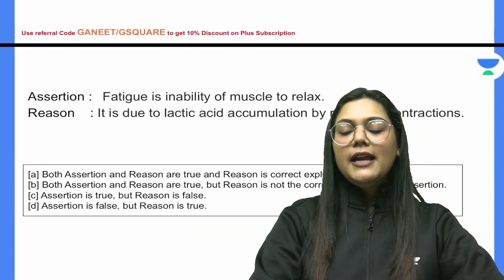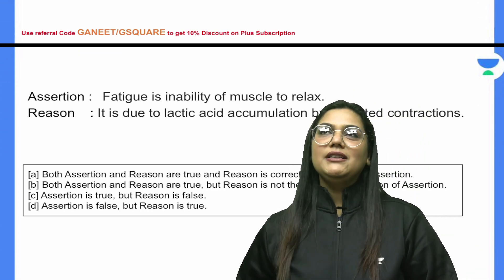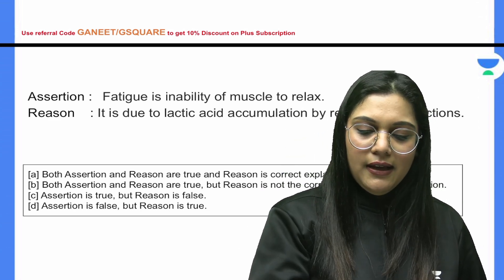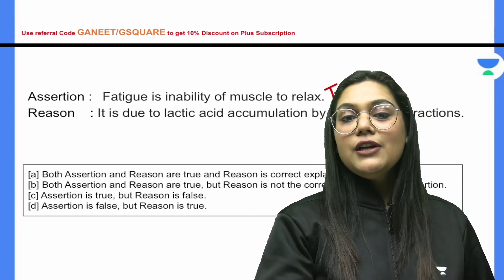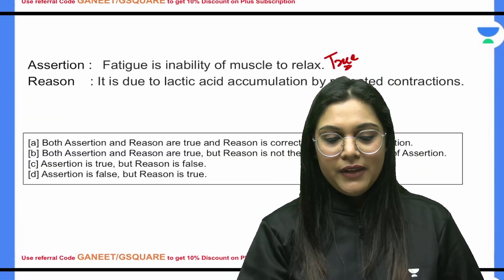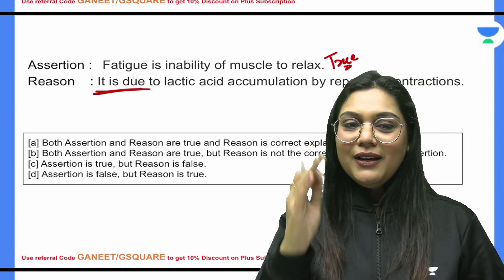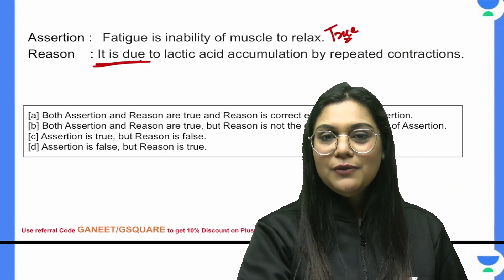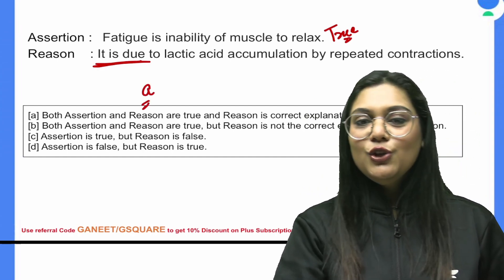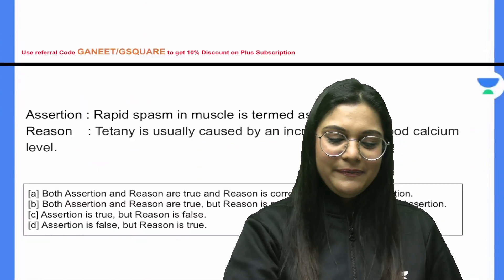Question 8: Fatigue is the inability of a muscle to relax — when we get tired the body cannot relax, which is why we need sleep to relax ourselves. The reason states it is due to lactic acid accumulation by repeated contraction — this directly explains the assertion. The answer is already given as A — an easy question!